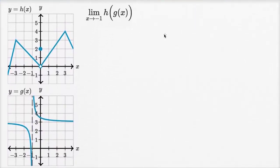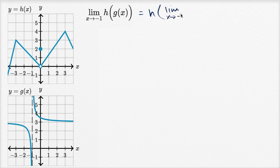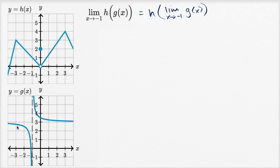Let's do a few more of these. We want to find the limit as x approaches negative one of h of g of x. Just like before, this is equal to h of the limit as x approaches negative one of g of x. So let's figure out the limit of g of x as x approaches negative one. We see at negative one there is a discontinuity. And as we approach x equals negative one from the left, it looks like we go unbounded in the negative direction.